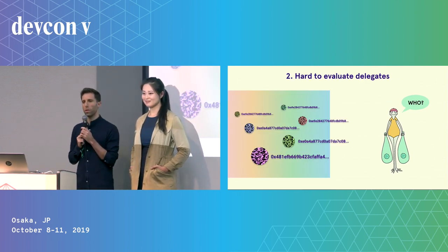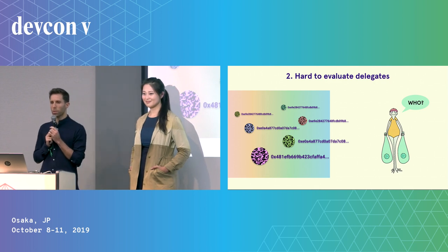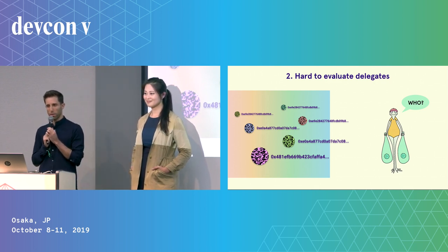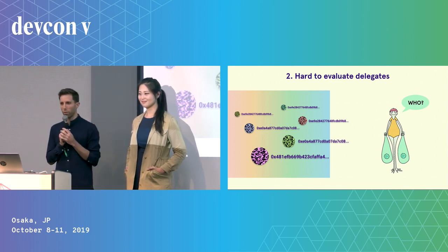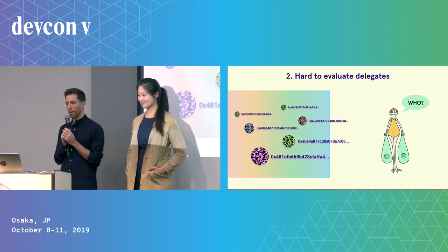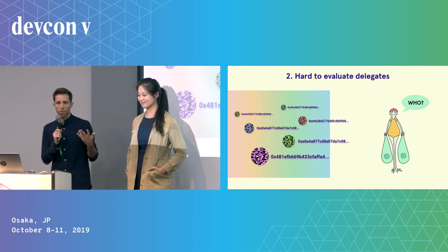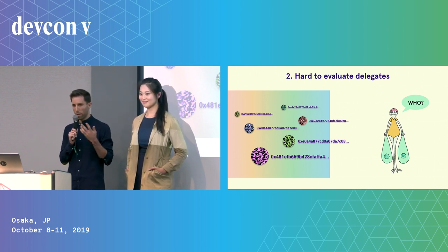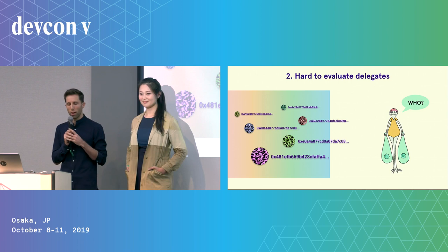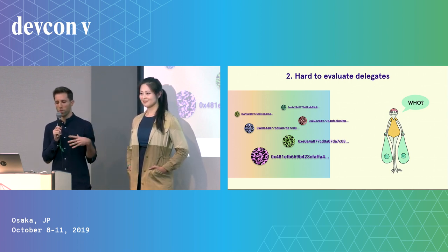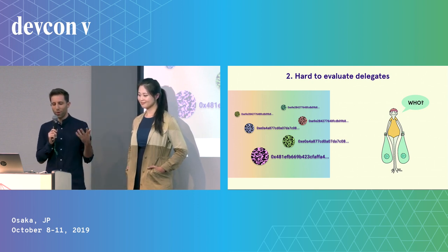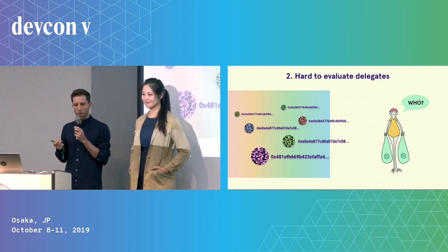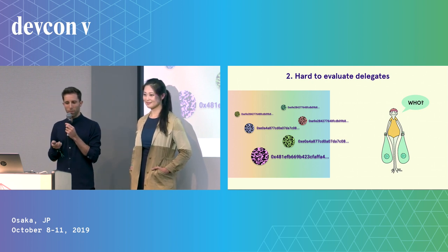Number two, it's really hard to evaluate delegates. In most proof-of-stake systems, a delegate is represented by their address — just a randomly generated string. The absence of a social identity layer — a name, a bio, an avatar, or a URL — makes it really difficult for users to evaluate who to stake towards. In Web 2.0 this is a given, but in a lot of these apps we saw, it's not available.